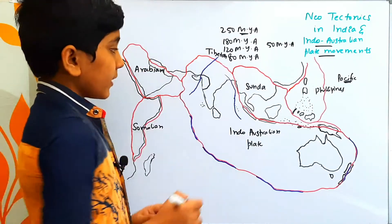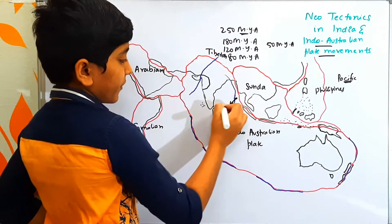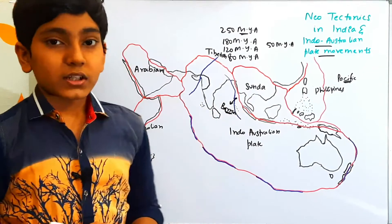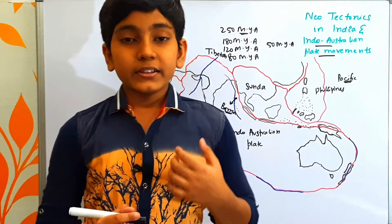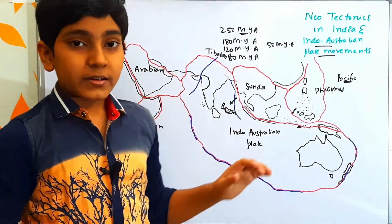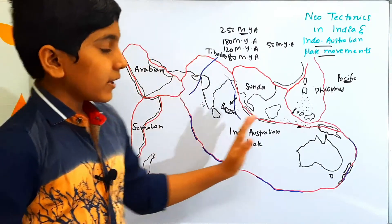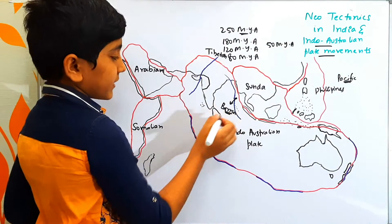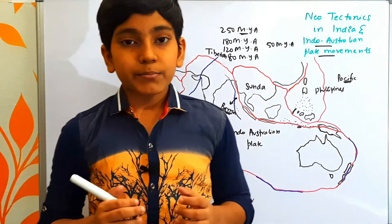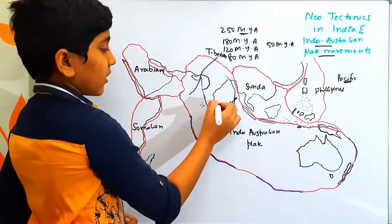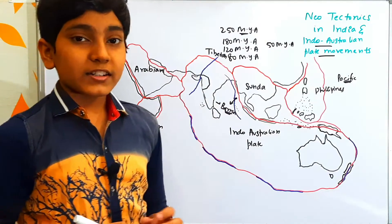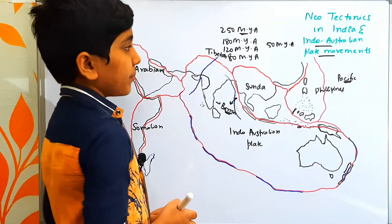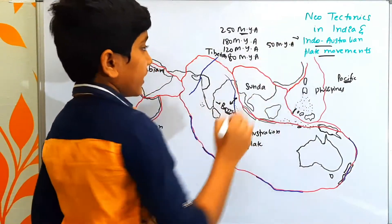And recently, we have the Barren volcano, which erupted in 2012, representing the diverging margins between the Indo-Australian plate as the Indian plate and the Australian plate. This is one of the best examples for diverging plate margins and is also an evidence for the diverging margins between the Indo-Australian plate. This was a brief history regarding the Indo-Australian plate movements.